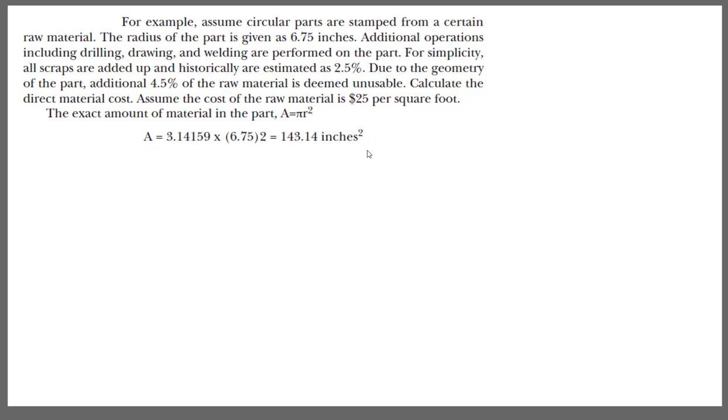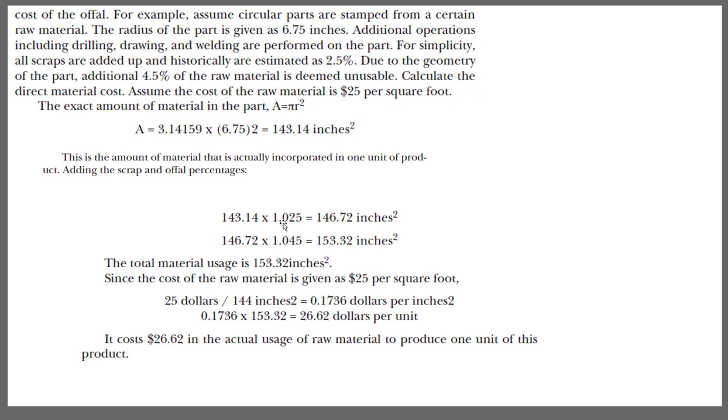Now remember this is the final product area. When you account for the scrap and the offal percentages your original area to start with will be higher than this. So to estimate that you need to first account for the scrap which is 2.5 percent. So you need to multiply by 1 plus 2.5 divided by 100 which is 1.025. So that's the factor you have to multiply to get the area that will account for the scrap.